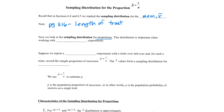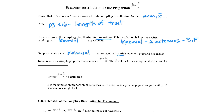This distribution is important when working with binomial experiments. A binomial experiment means there are two outcomes — bi meaning two. We can call them success or failure. Suppose we repeat a binomial experiment with n trials over and over. For each set of n trials, we record the sample proportion of successes, which is p-hat, equal to r over n.